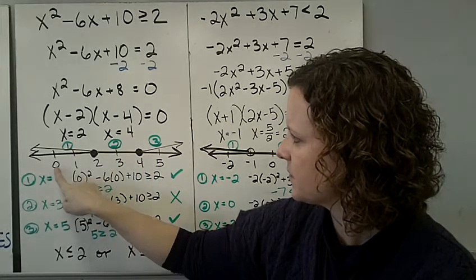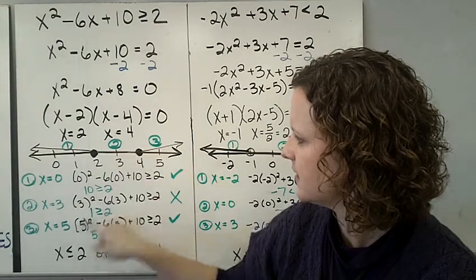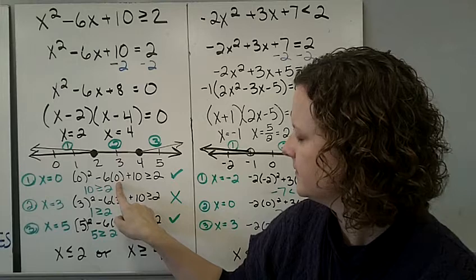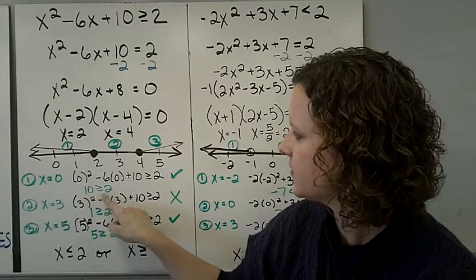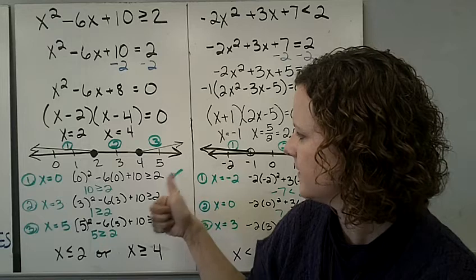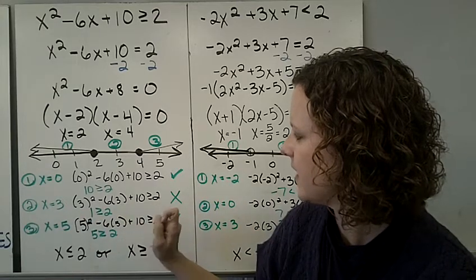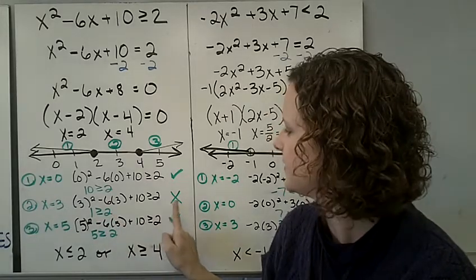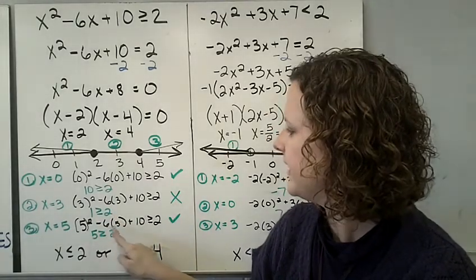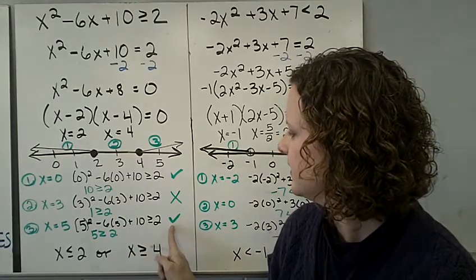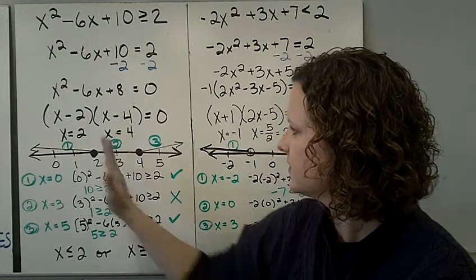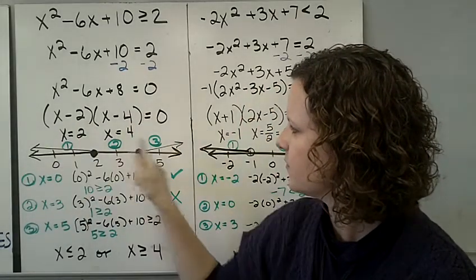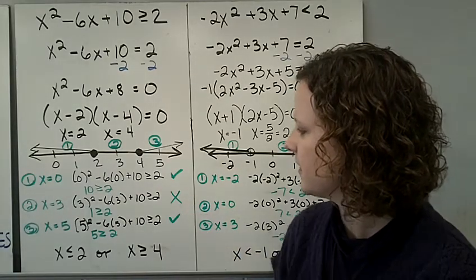I grab an x from the first region, an x from the second region, and an x from the third region. Plug them in. Do your calculations. 10 is greater than 2. We're good. Plug in 3. Do your calculations. 1 greater than 2. No. Doesn't work. Put in 5. Do your calculations. 5 is greater than 2. So our answer is less than 2, greater than 4, because it's region 1 and 3 are your solutions. So you get your answer.